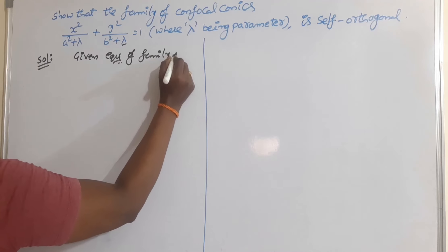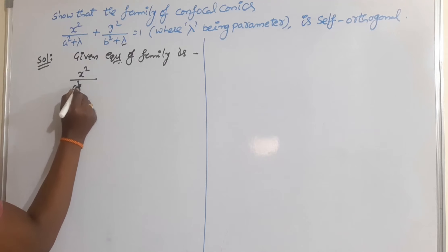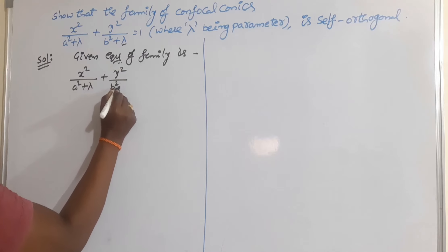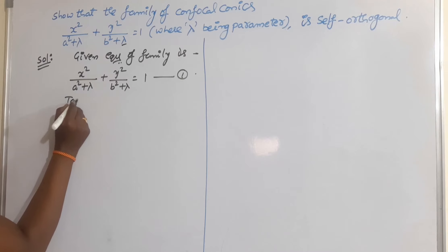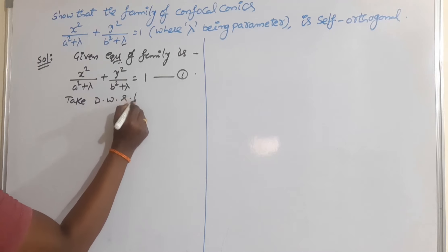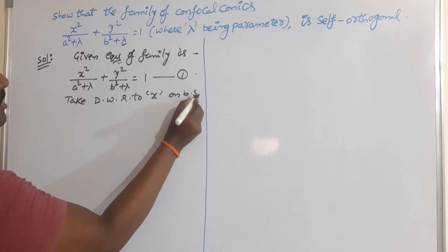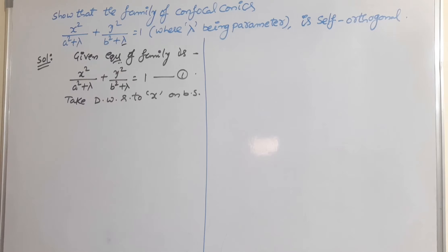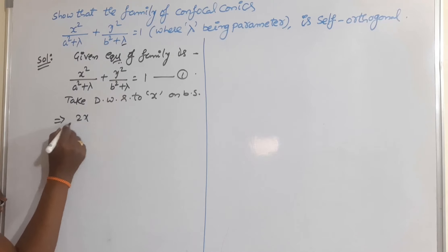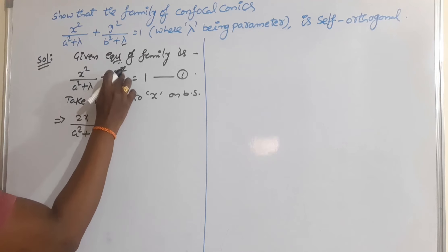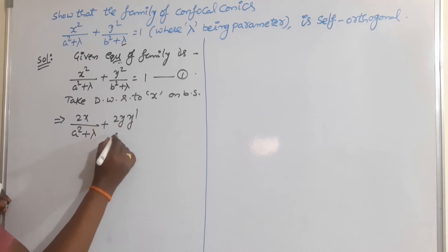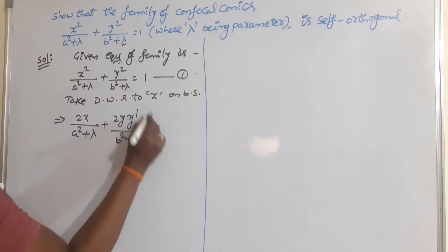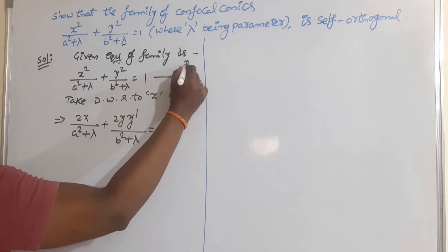The given family is x²/(a²+λ) + y²/(b²+λ) = 1, where λ is the parameter. To get the differential equation, we take the derivative with respect to x on both sides. Since only one parameter is involved, we take the derivative only once. The derivative gives: 2x/(a²+λ) + 2y·y'/(b²+λ) = 0.